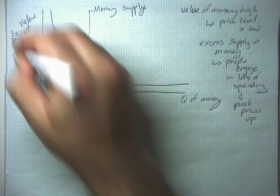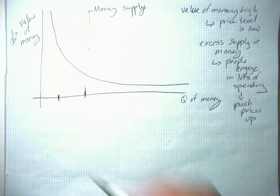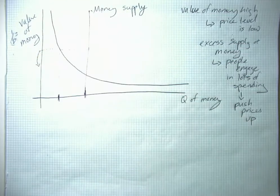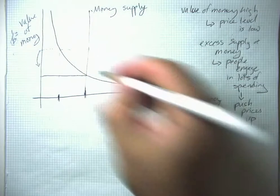So what happens to prices when people engage in a lot of spending? Well, when people engage in a lot of spending, that's going to tend to push prices up. And remember, when prices go up, the value of money falls. So if we start up here, we're going to tend to go downwards until we reach this point of equilibrium.